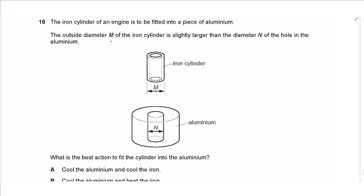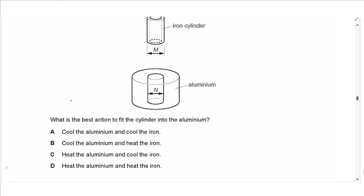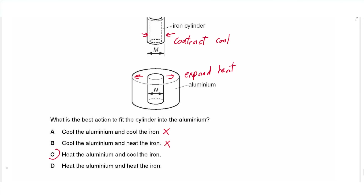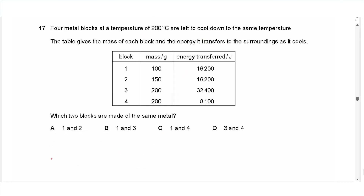Question 16: An iron cylinder must be fitted into a hole in aluminium, where the cylinder's diameter is slightly larger than the hole. We need to contract the iron cylinder and expand the aluminium — so cool the iron and heat the aluminium. The answer is C.